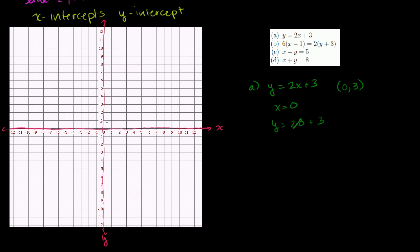Let me plot that point (0, 3). Notice this point is where x = 0, so it sits on the y-axis. We call this the y-intercept — it's called the y-intercept because this is where the line intercepts the y-axis.